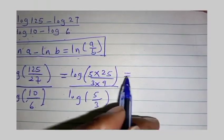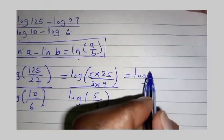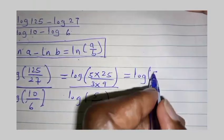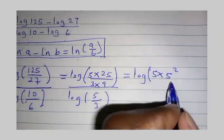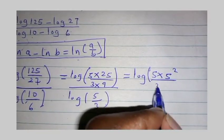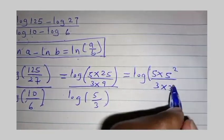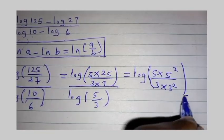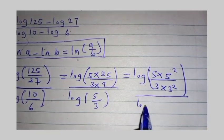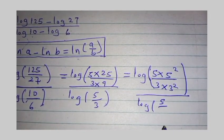Then, we have log of 5 times 25 can be written as 5 power 2 and 9 can be written as 3 power 2. Everything here is log divided by log of 5 over 3.